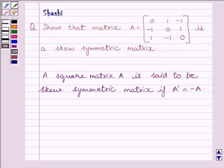A square matrix A is said to be a skew symmetric matrix if A transpose is equal to minus A, or we can say transpose of A equals negative of A. This is the key idea to solve the given question.